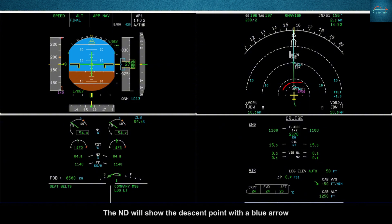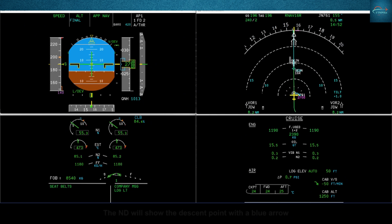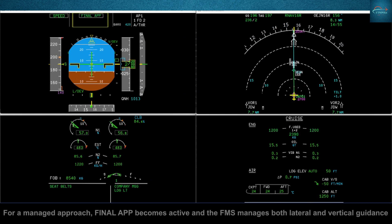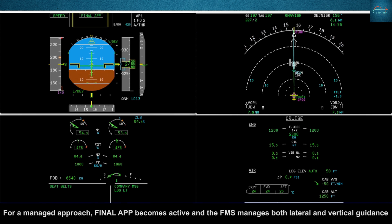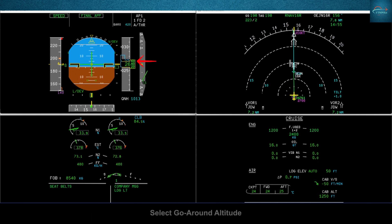Approach NAV displays when the aircraft is following the lateral profile. The ND will show the descent point with a blue arrow. For a managed approach, final approach becomes active and the FMS manages both lateral and vertical guidance. Select go-around altitude.